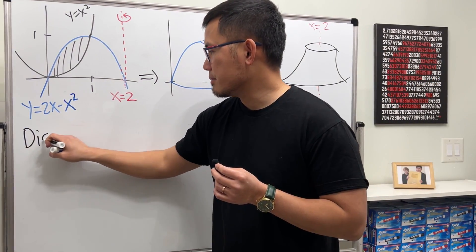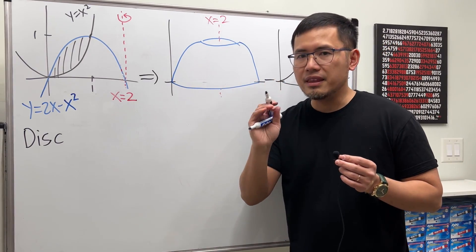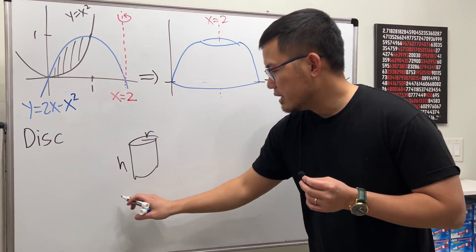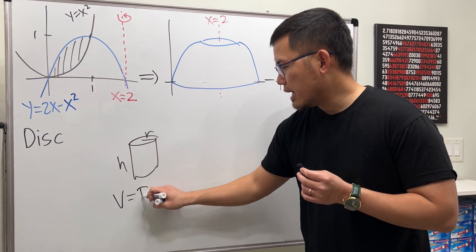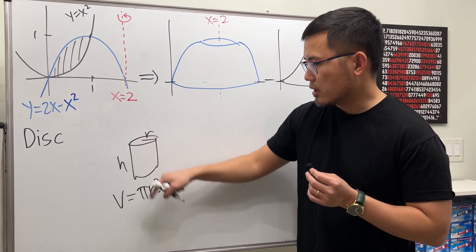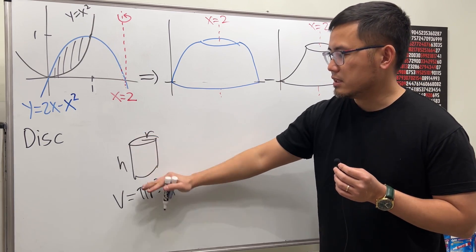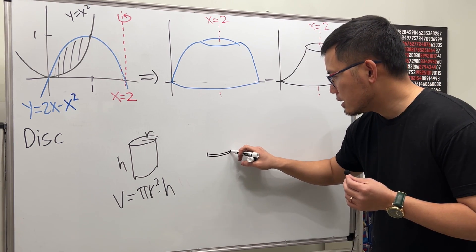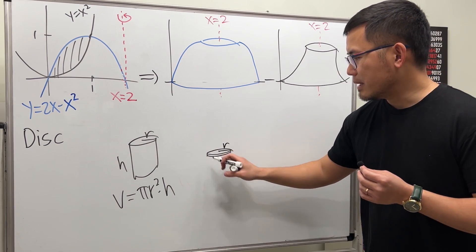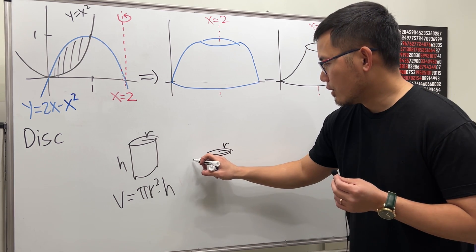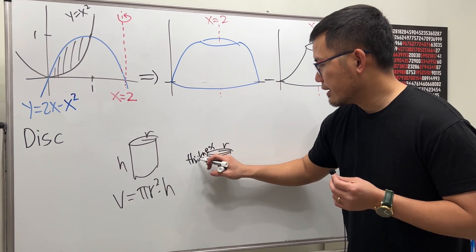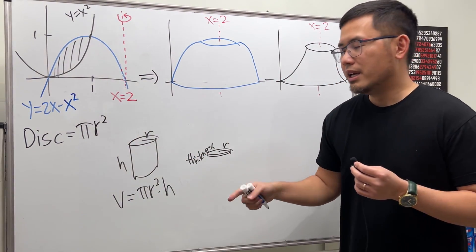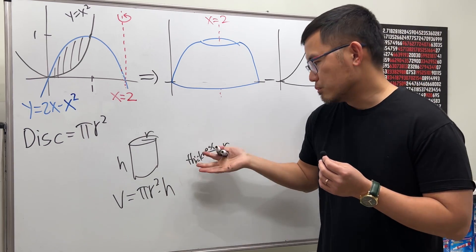For the disk method, a disk is essentially a very thin cylinder. If a cylinder has radius r and height h, its volume is the area of a circle — π r² — times h. Think of it as a pile of CDs. For a disk, instead of height h we call it thickness, so the volume is π r² times the thickness.